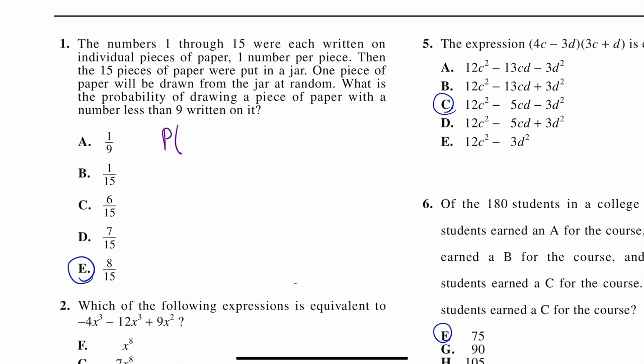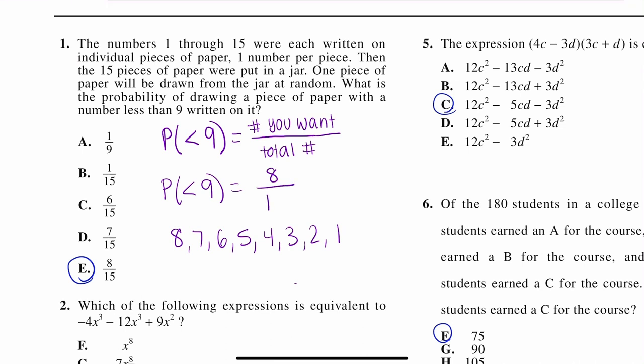I want the probability of me picking a piece of paper that is less than 9. Whenever you're doing probability, on the top is the number you want over the total number. So, if I'm thinking of my pieces of paper, and they're labeled 1 through 15, I want all the numbers less than 9. That doesn't include 9. So I want 8, 7, 6, 5, 4, 3, 2, and 1. So, that is a total of 8 pieces over, there's a total of 15 pieces in the jar. So, our answer is answer E, 8 over 15.